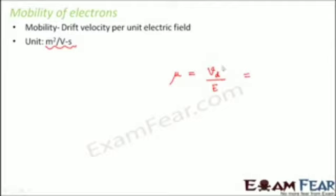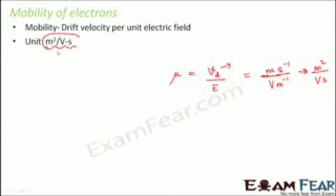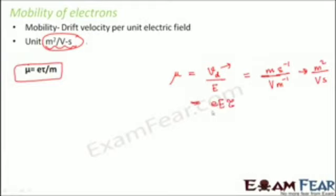The unit for drift velocity is meter per second, and the unit for electric field is volt per meter. Dividing gives meter squared per volt-second — that's how you get this unit. The expression for mobility is mu equals eτ/m. Since drift velocity equals eEτ/m, dividing by E cancels E, so mobility of an electron is charge on an electron multiplied by relaxation time divided by mass of an electron.